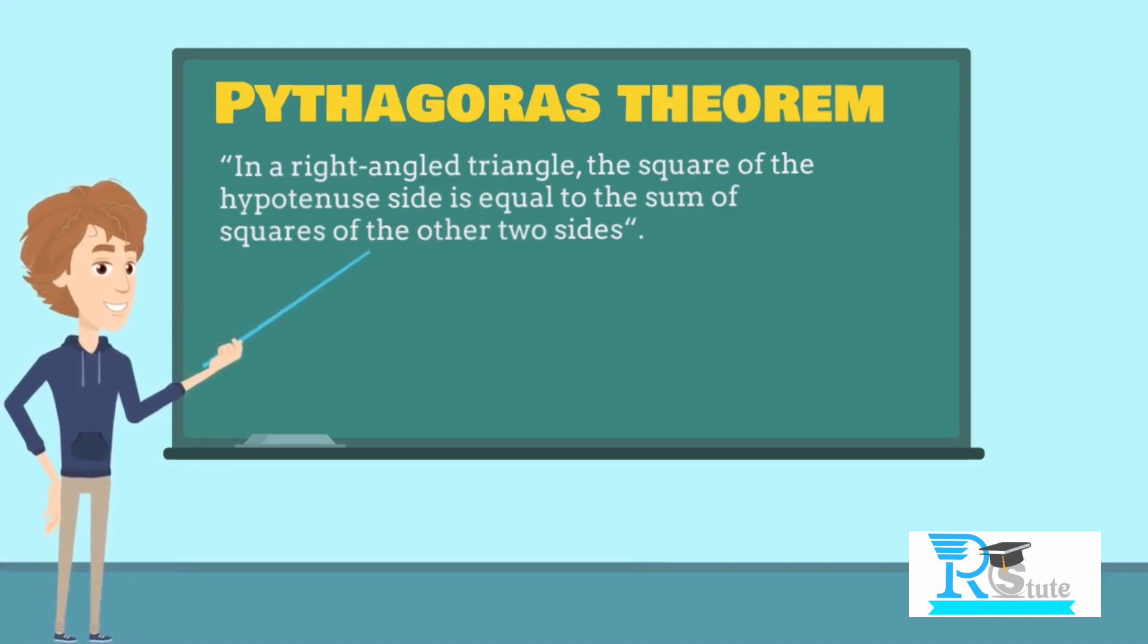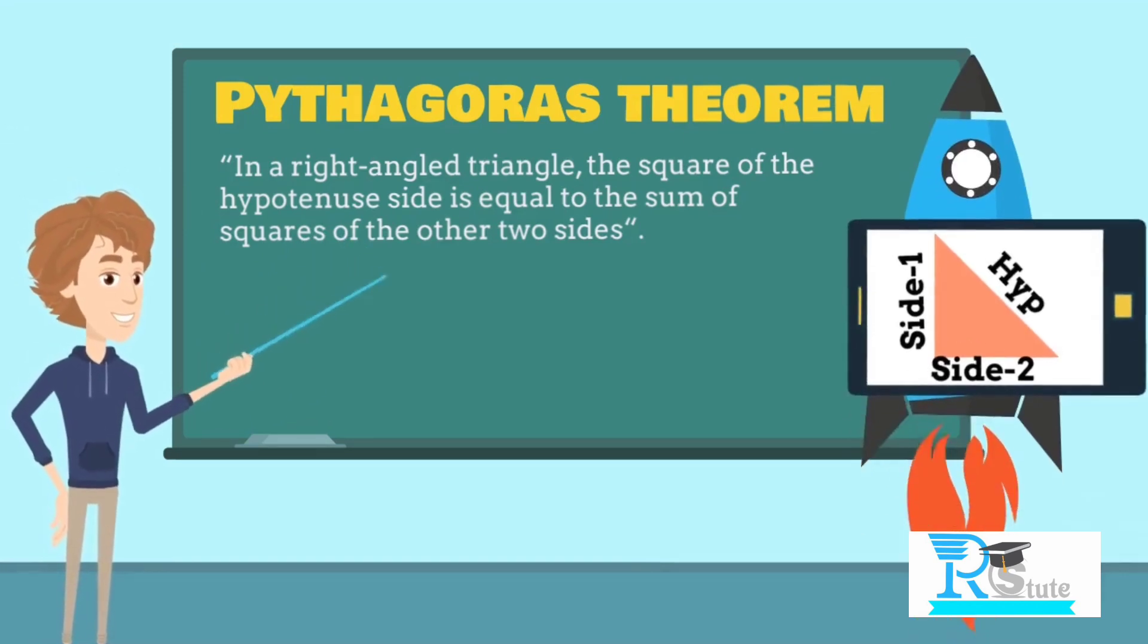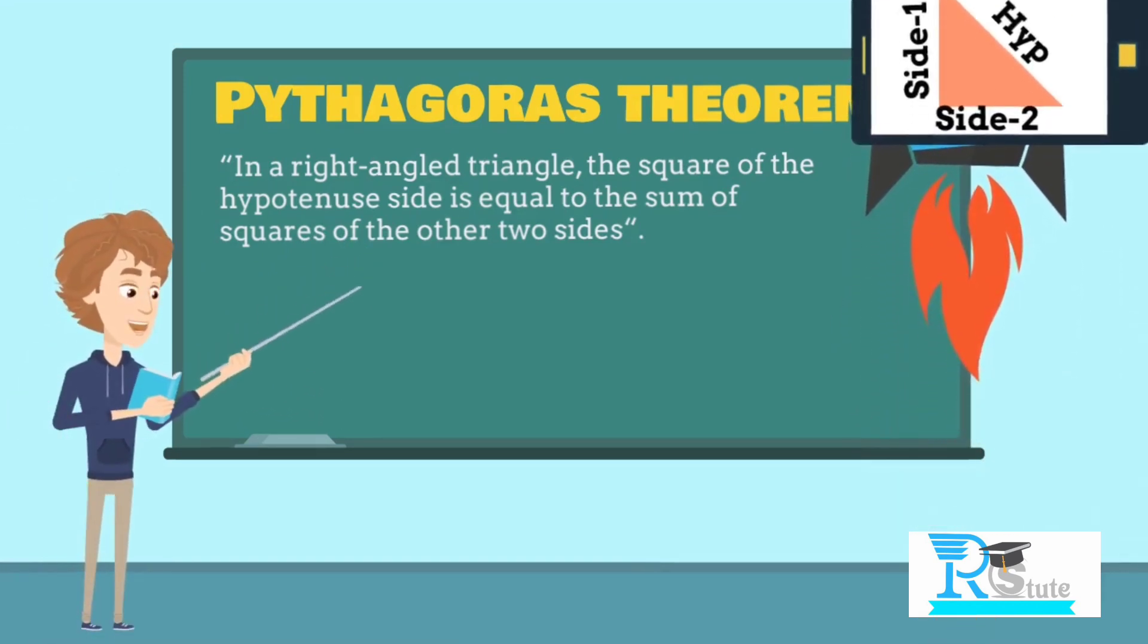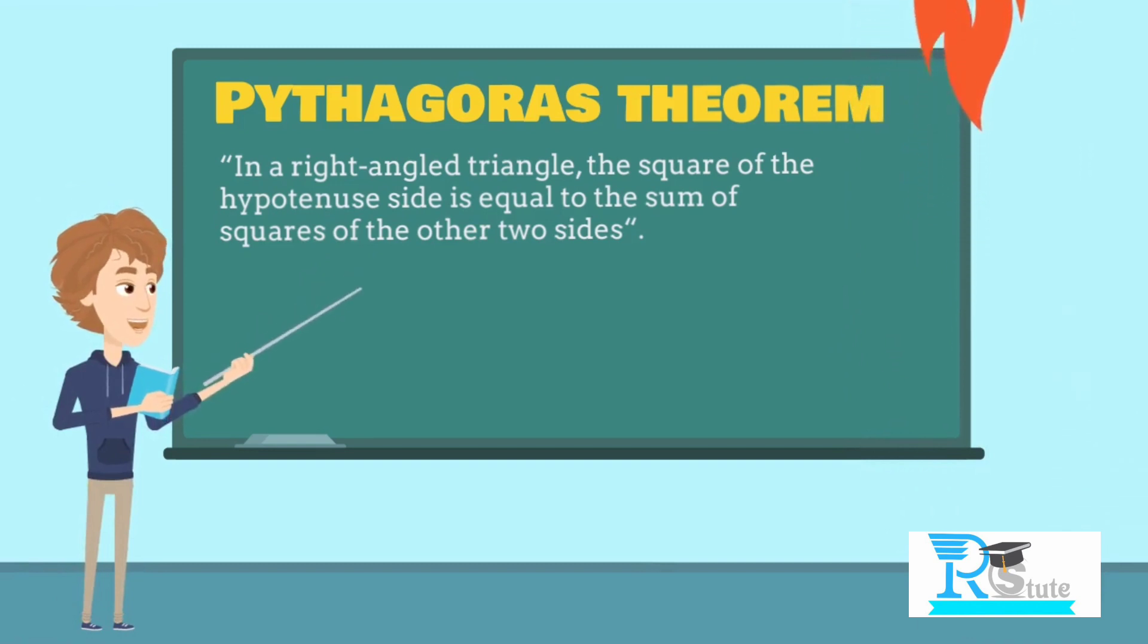According to Pythagoras, in every right angle triangle, the square of the hypotenuse side is equal to the sum of the squares of the other two sides. That means, hypotenuse² = side 1² + side 2².